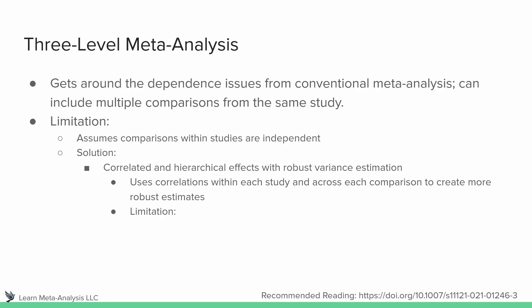There is a limitation to this though: you're selecting the correlation, and it's not always known what the correlation between measures actually is. So you're essentially guessing, and you should run sensitivity analyses to see how much the effect sizes vary depending upon the correlation you choose. I have a paper listed on the screen — the DOI is in the bottom right. If you're going to be conducting meta-analyses, especially with correlated and hierarchical effects, I highly recommend reading that paper. It's a wonderful paper and gives a really good overview of this.